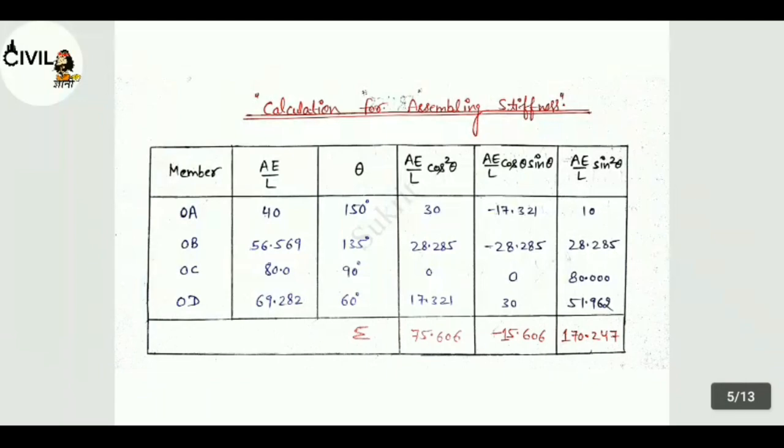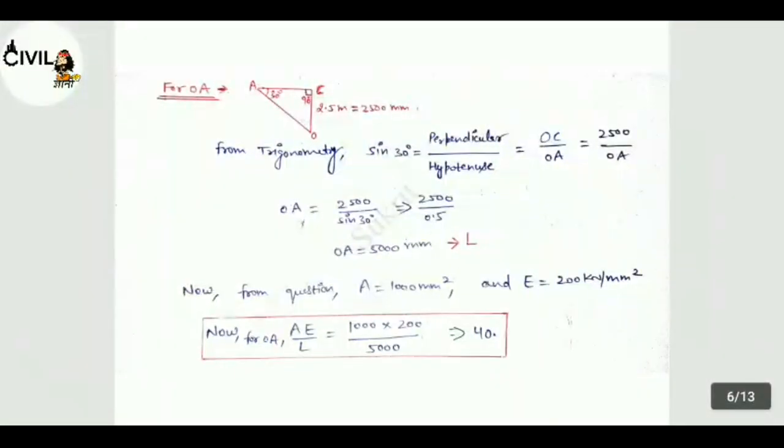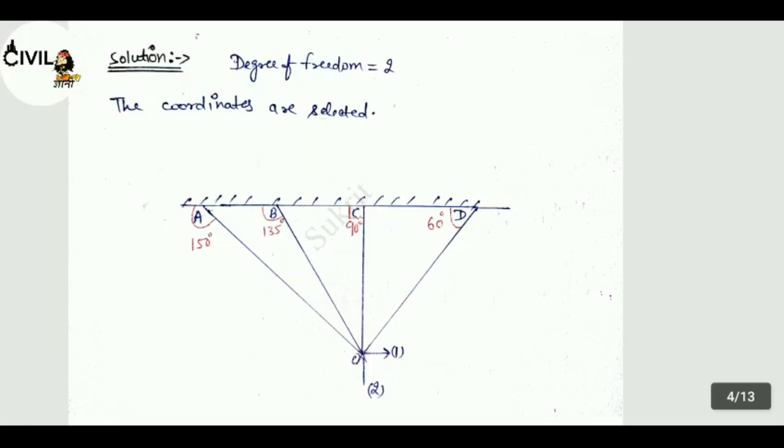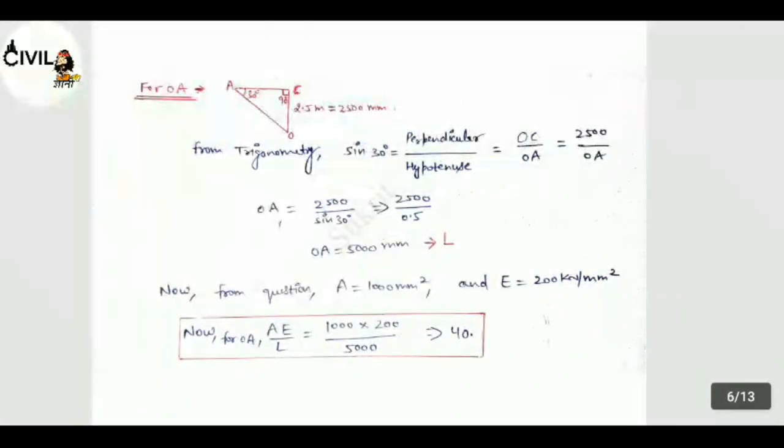Member has written. For example, we have member OA. We have drawn OCA. OC is given 2.5 meter, means 2500 mm. Angle is given 90 degree and 30 degree. So from trigonometry, sin 30 is equal to perpendicular divided by hypotenuse. Perpendicular is OC, hypotenuse OA. So OC is equal to 2500. OA you can calculate. So OA is equal to 2500 divided by sin 30. So value is OA equal to 5000 mm. This value is L.